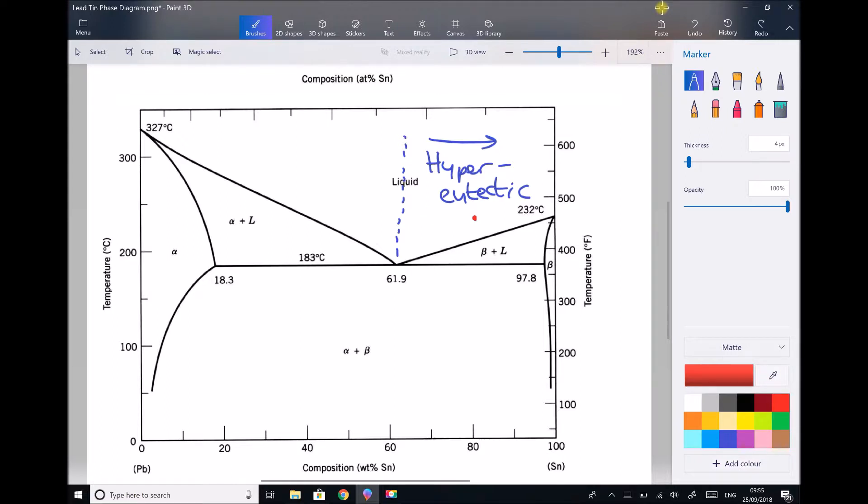So we can see that if we're at 230 degrees, at a composition of 80%, then we have a liquid. So we have a fully molten alloy. But if we begin to cool that, and let's cool it first of all, to 190 degrees.